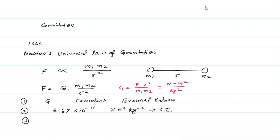In the CGS system, the value of G is 6.67 times 10 to the power of minus 8, and the unit is dyne centimeter squared gram to the power of minus 2.